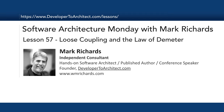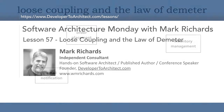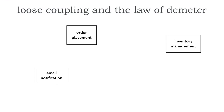In today's lesson number 57, we'll take a look at loose coupling and something called the Law of Demeter. We've been trying to strive for loose coupling for quite some time in architectures, and finding that it is in fact fairly difficult.